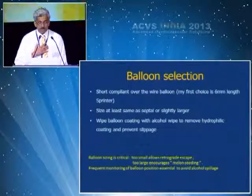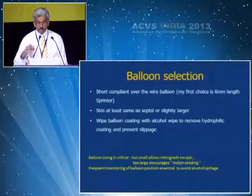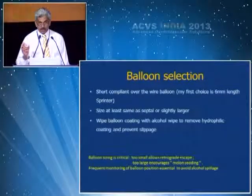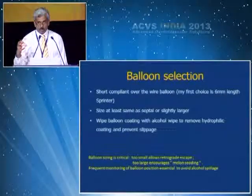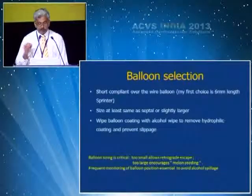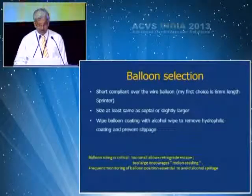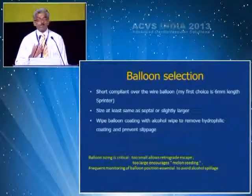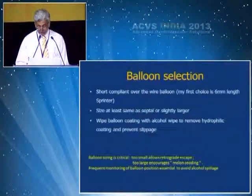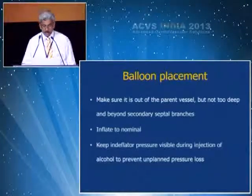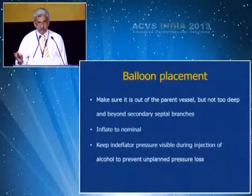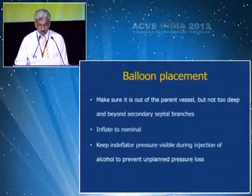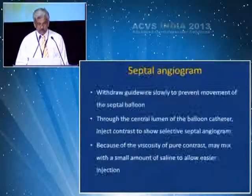The balloon selection should be a short, compliant, over-the-wire balloon; my first choice is the Sprinter by Medtronic at 6 mm. The size should be at least the same as the septal artery or slightly larger to avoid leak. Wipe the balloon coating with an alcohol swipe to remove the hydrophilic coating and prevent slippage. Do not use a small balloon, because you will have retro-escape of the alcohol and melon-seeding — it is very important to prevent alcohol slippage.